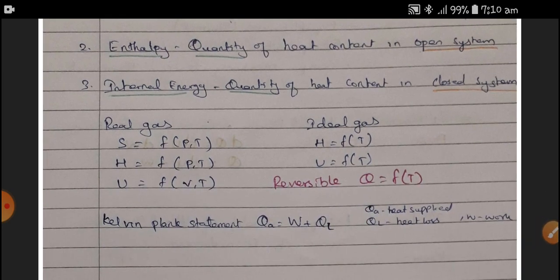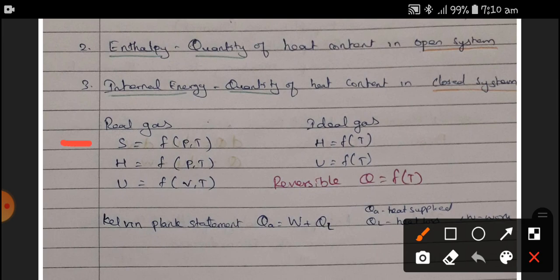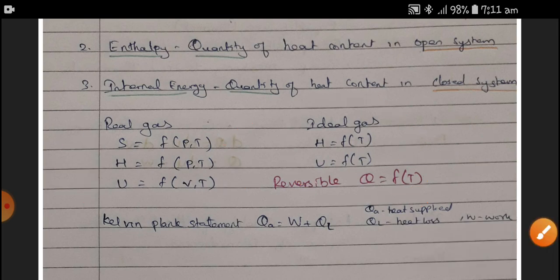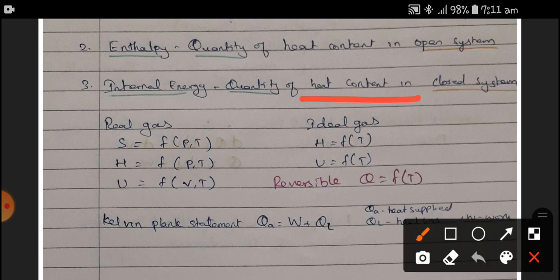Next, we discuss real and ideal gases. For a real gas, entropy is a function of pressure and temperature, enthalpy is a function of pressure and temperature, and change in internal energy is a function of volume and temperature. For an ideal gas, heat is also a function of temperature only — meaning if temperature changes, then internal energy, enthalpy, or heat changes. For a real gas, the behavior is different.